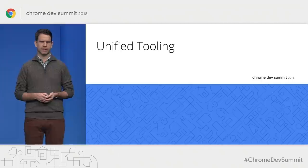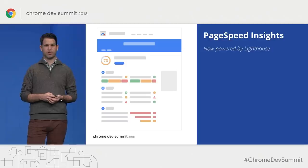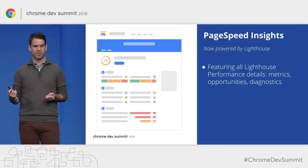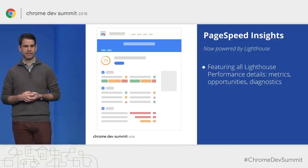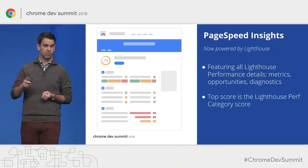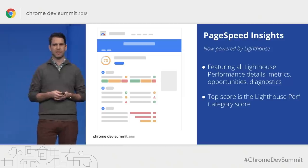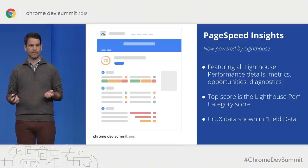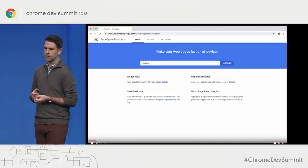We've been working hard and collaborating with the search team on this, and today we're excited to announce a brand new next generation of PageSpeed Insights now powered by Lighthouse. Now if you use PageSpeed Insights, all of the data you've been seeing in Lighthouse when it comes to performance is in the report — all of the metrics, opportunities, and diagnostics are right there. The top score is the Lighthouse performance category score, so we're kind of speaking the same language. And the Chrome UX Report data that has been available inside of PageSpeed Insights is there too. Let's take a look at chrome.com in PageSpeed Insights.